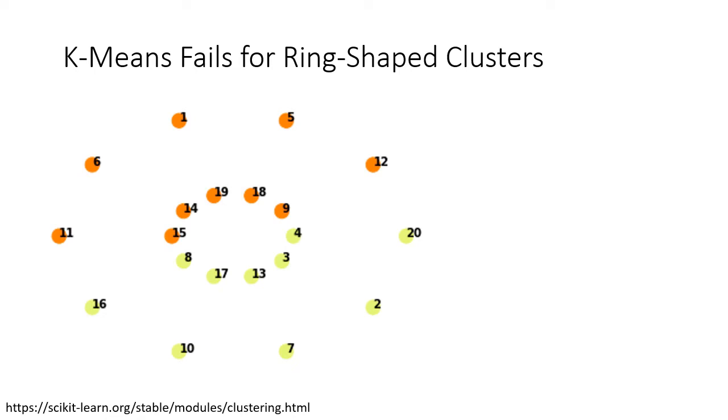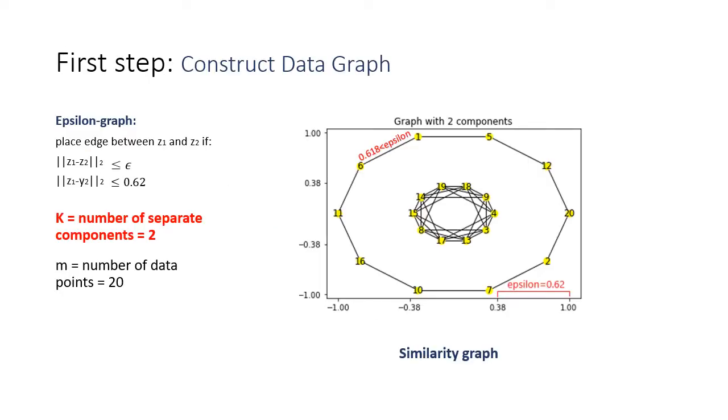For such situations, other clustering methods are used, and one of them is spectral clustering, which is discussed further on. So let's start with spectral clustering. In the first step, similarity graph is constructed for the dataset. Each node in the graph represents a certain data point. Two nodes are connected by an edge if the distance between their feature vectors is lower than a certain number epsilon.